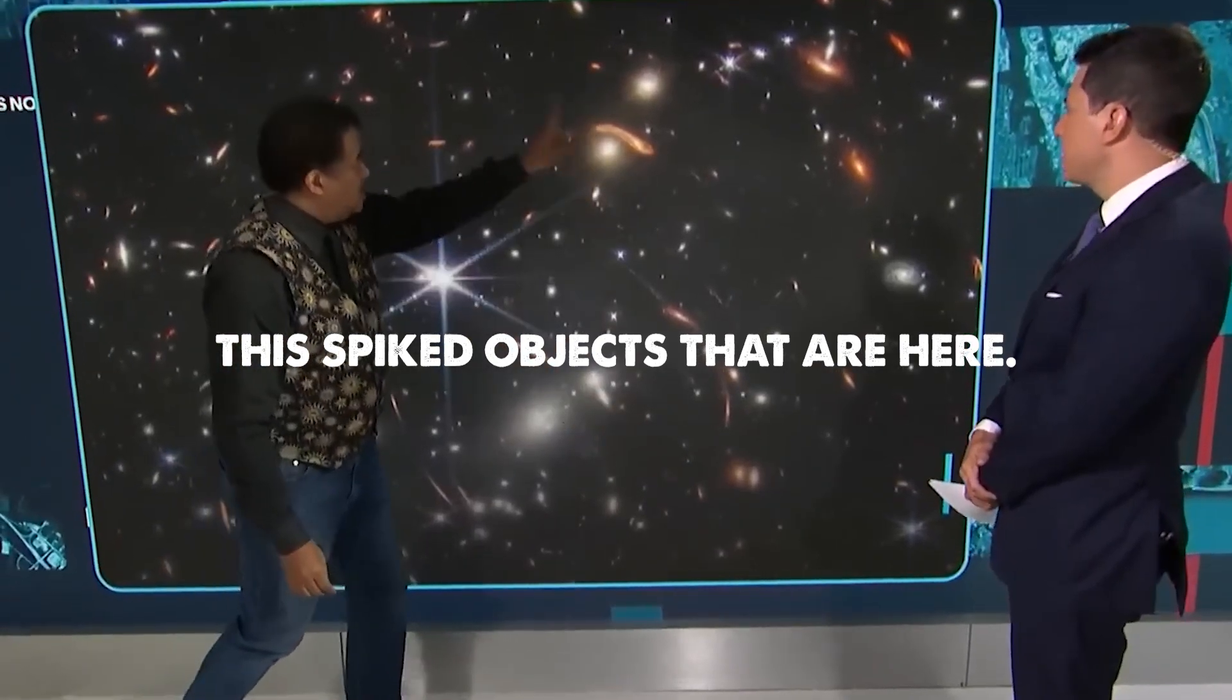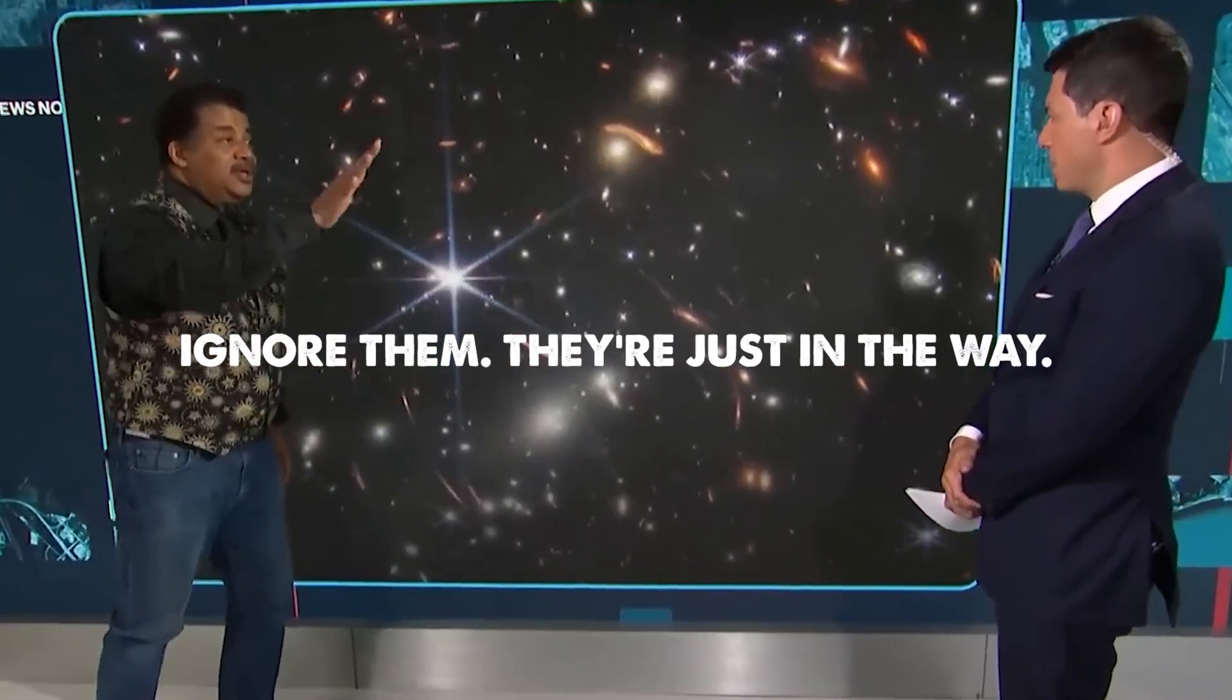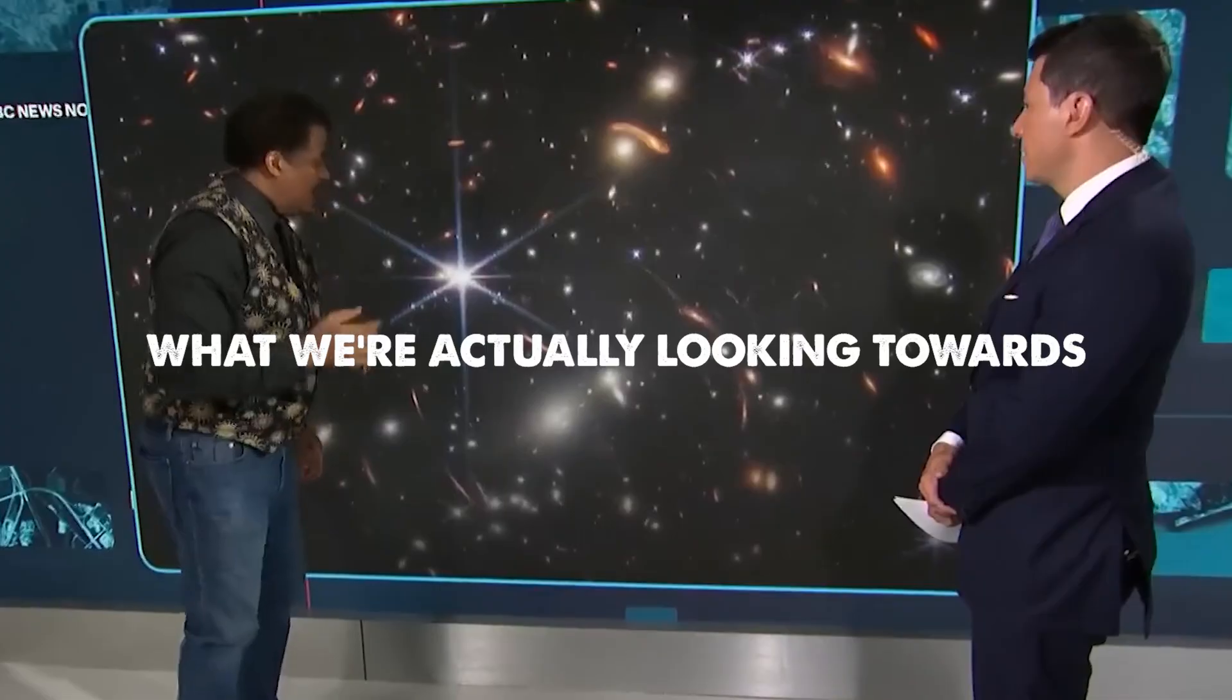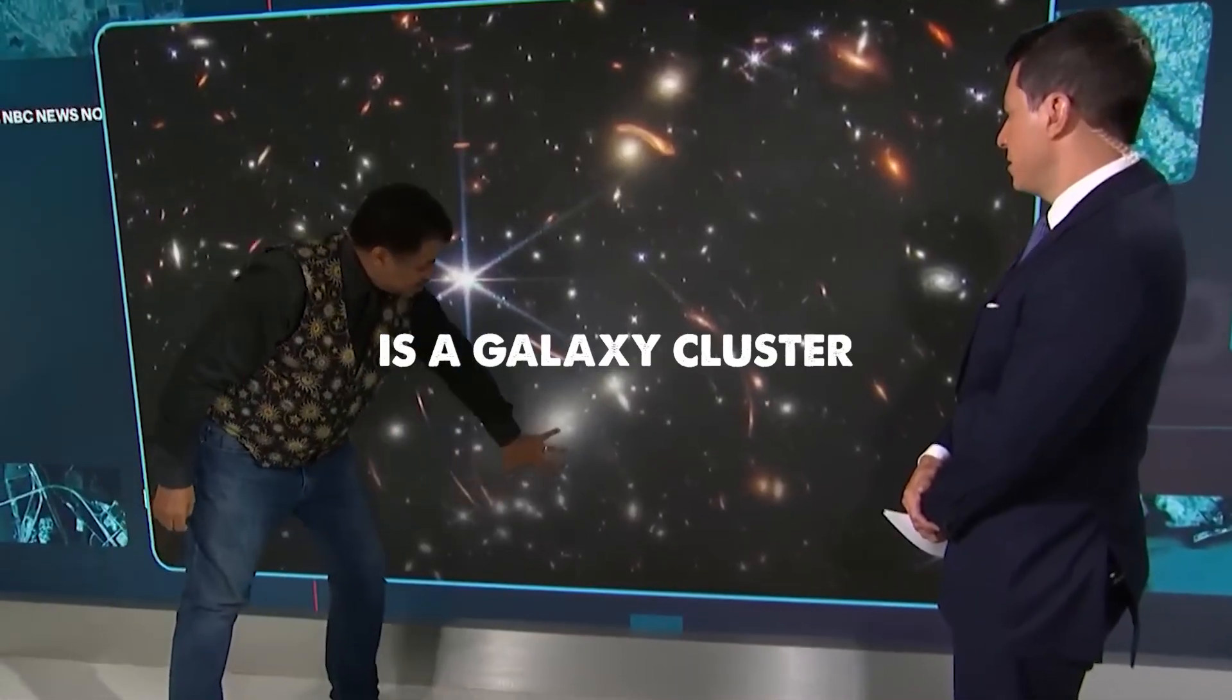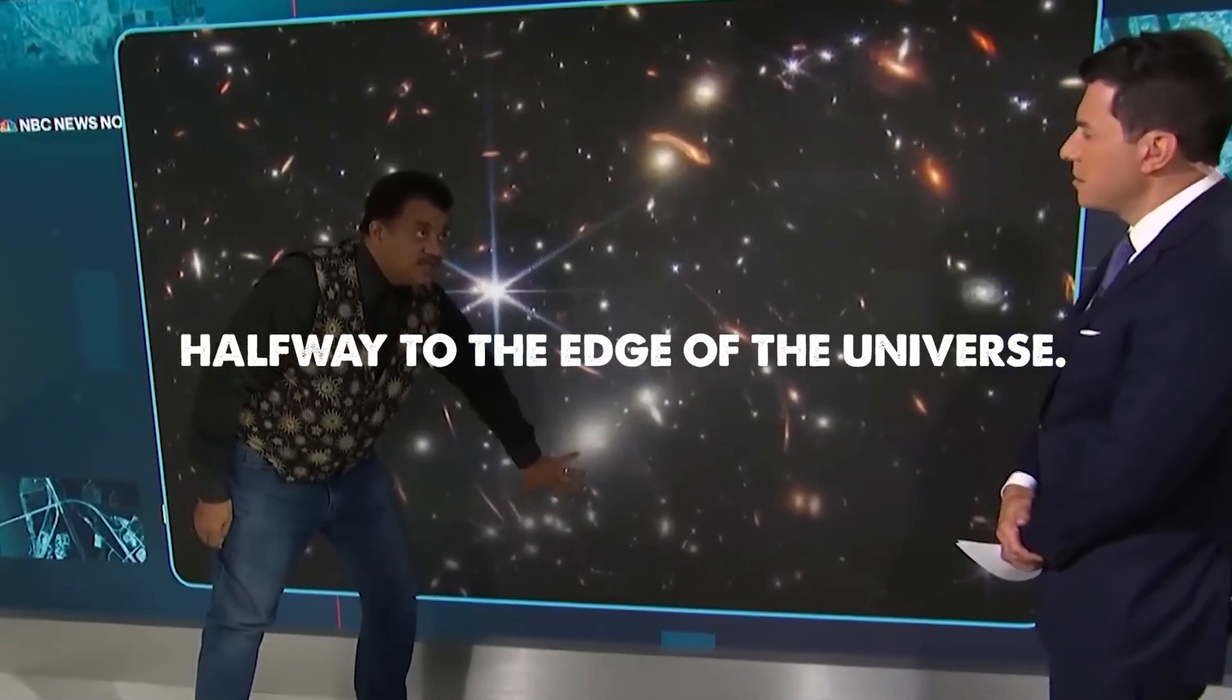These are the spiked objects that are here. Ignore them. They're just in the way. What we're actually looking towards is a galaxy cluster halfway to the edge of the universe.